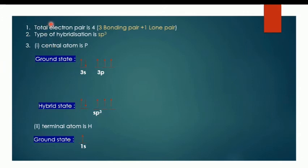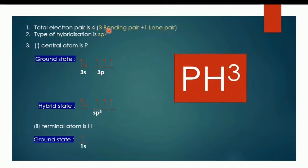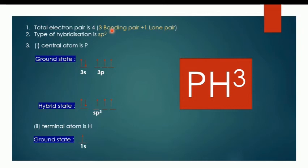Now for the other question — the overlapping orbital for the PH3 molecule. First, total the electron pairs: PH3 has one lone pair and three bonding pairs, giving four electron pairs. Second, state the type of hybridization, which is SP3, because one S orbital plus three P orbitals equals SP3.